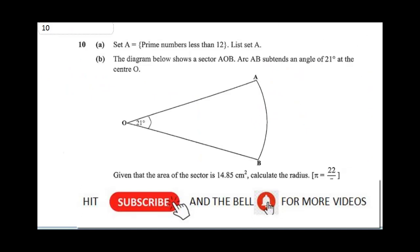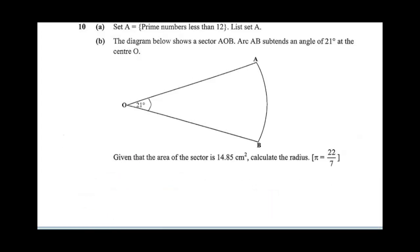Question 10 says, set A equals prime numbers less than 12, list set A. To list set A, A will be the set of prime numbers less than 12: 2, 3, 5, 7, and 11. So these are the prime numbers less than 12.